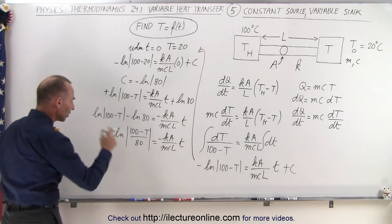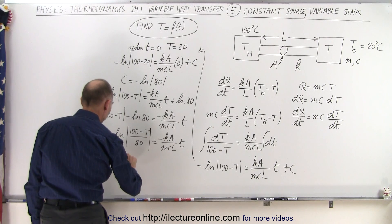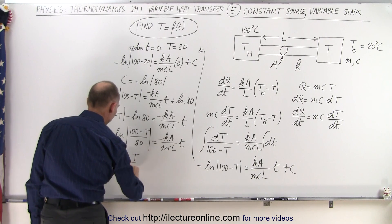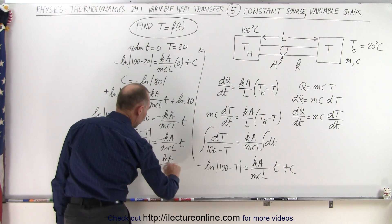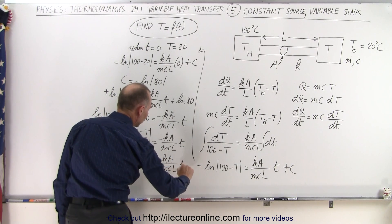When I do that on the left side, I end up with 100 minus T over 80 is equal to E to the minus KA over MCL times T.